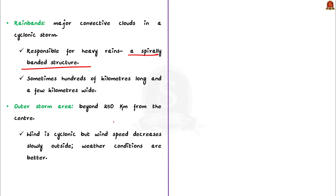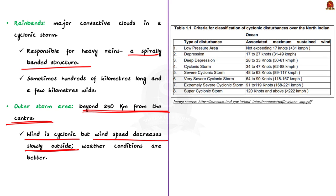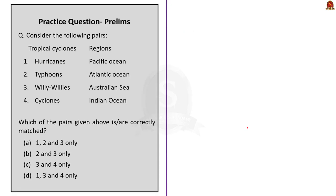Beyond the eye wall, major convective clouds are responsible for heavy rains and have a partially spirally banded structure. These spiral bands can be hundreds of kilometers long and a few kilometers wide. The outer storm area is the region beyond 250 kilometers from the center, where wind speed decreases slowly outward and weather conditions are better with scattered cumulus growth interspersed with spiral bands — this is where the climate is actually pleasant. A classification table of cyclonic disturbances over the northern Indian Ocean is provided for reference, from which preliminary exam questions can be expected.